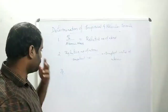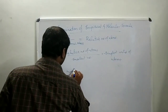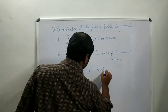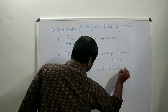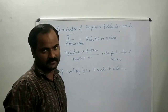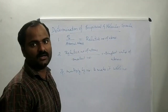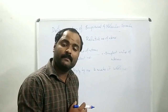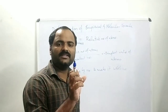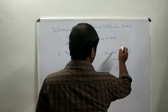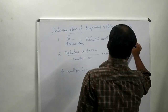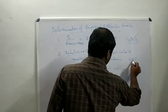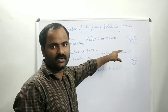Then, if any atom's ratio is a fraction, you multiply by a suitable number to make all values whole numbers. You then write these whole numbers as subscripts along with the symbols of the atoms on the right side below, like C₁H₂O₁.